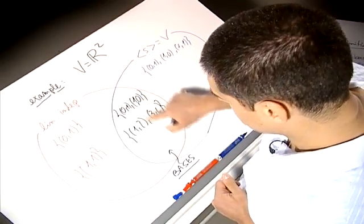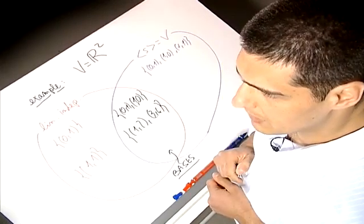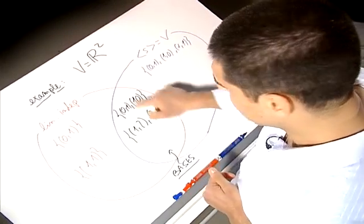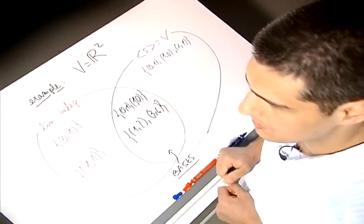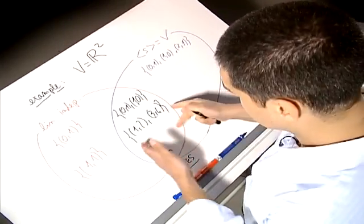You may notice that we can have different choices for the basis, but they all have something in common. In particular, the number of elements forming each basis is always the same. In this example, it is 2.